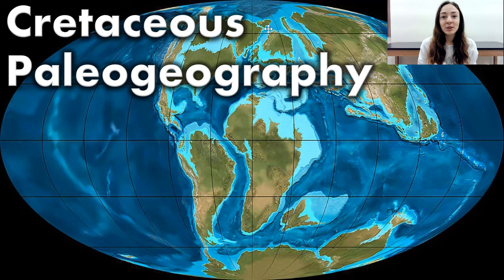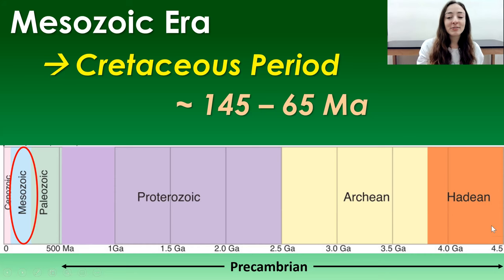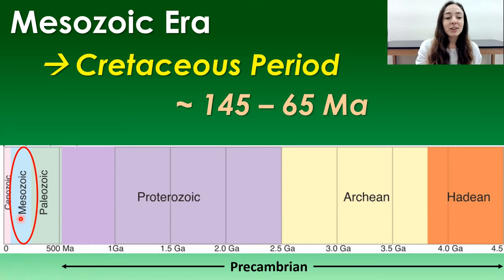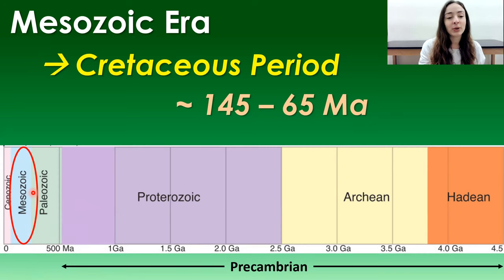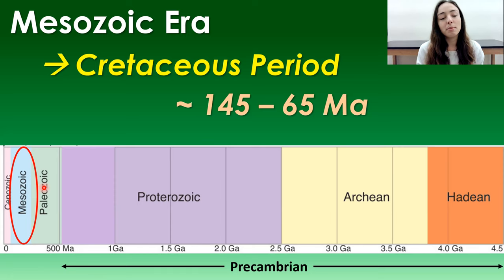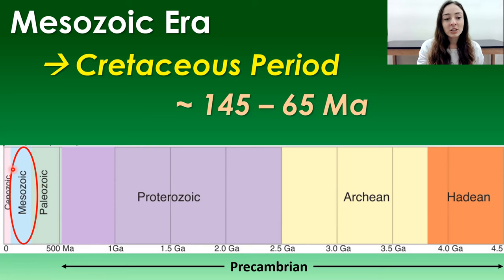Just for reference, this is a timeline of Earth's history going from oldest to youngest, right to left. Over here on the left I've circled the Mesozoic, because that is the era in which the Cretaceous period occurred. The Cretaceous is the last period of the Mesozoic; the two periods before it are the Triassic and Jurassic, and those three make up the Mesozoic era.